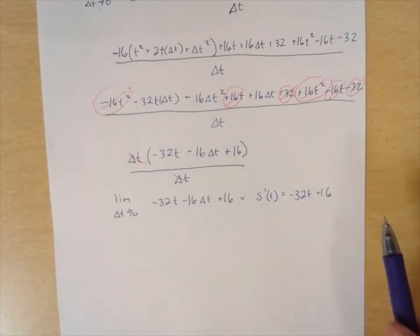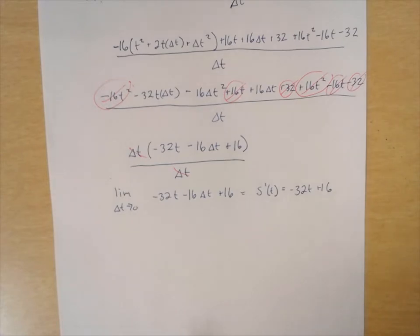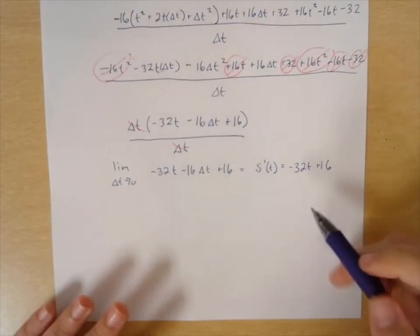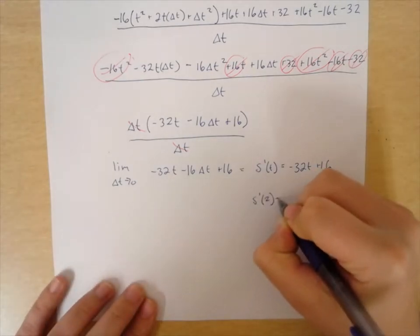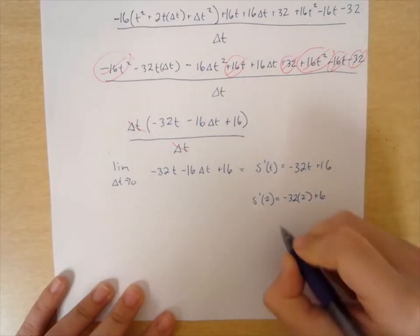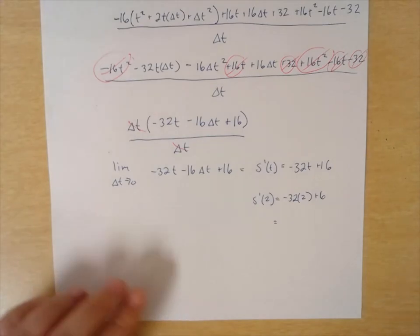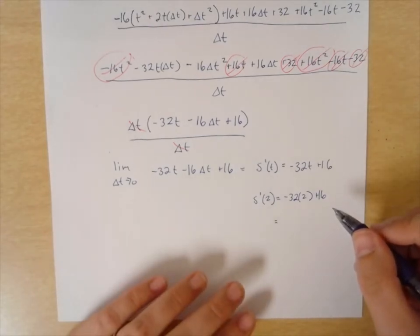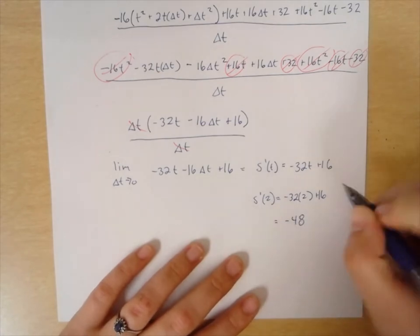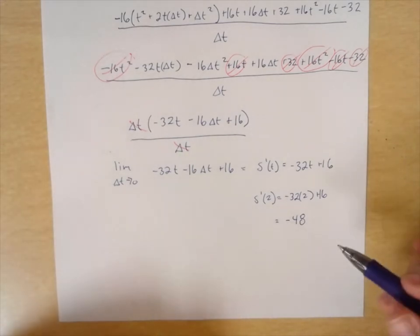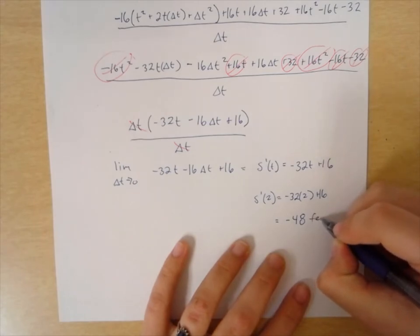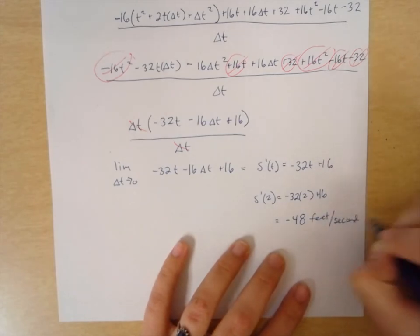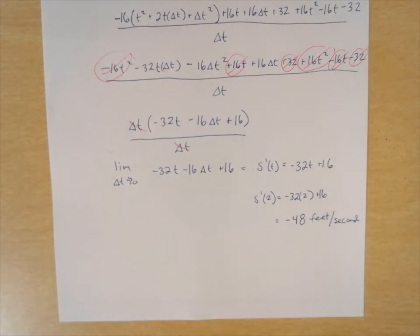We know the diver hits the water at t = 2, so we substitute: s′(2) = −32(2) + 16 = −64 + 16 = −48. The units are feet per second, coming from the original initial velocity of 16 feet per second. So the diver's velocity at impact is −48 feet per second. That's all — thanks for watching.